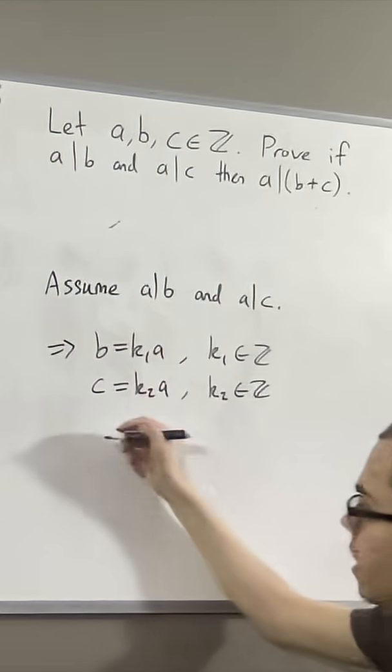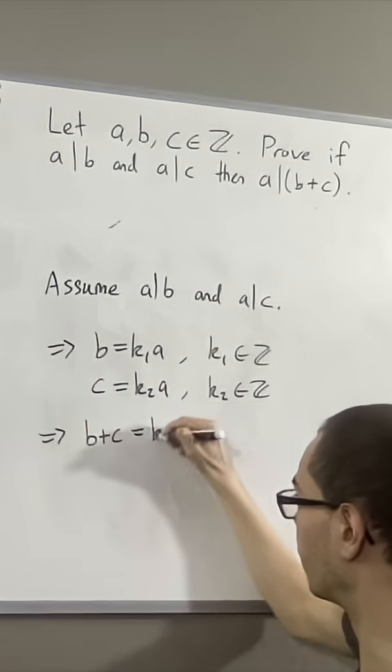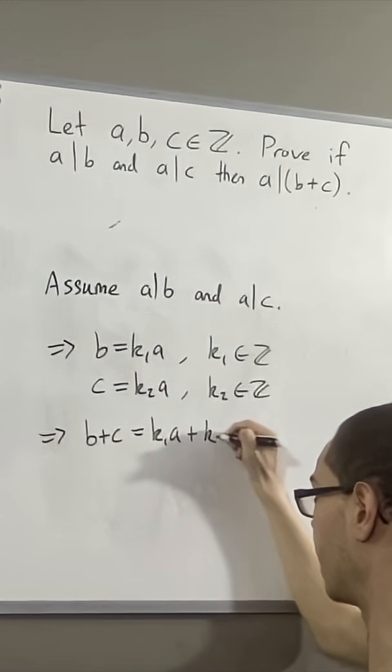But then if we add these two guys together, we see that b plus c is equal to k1a plus k2a.